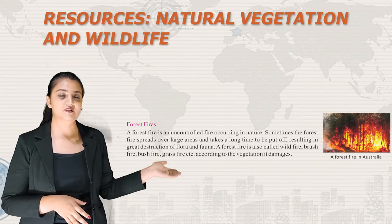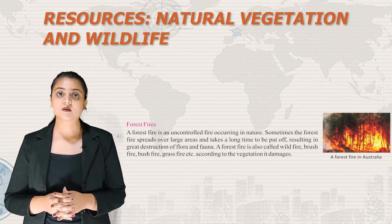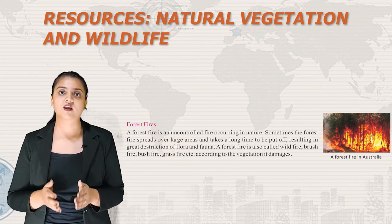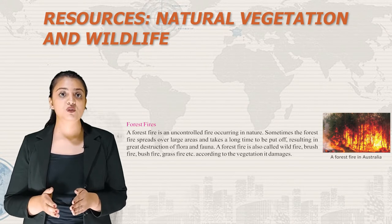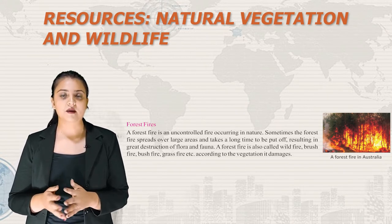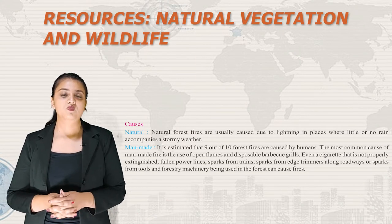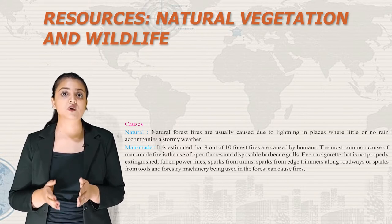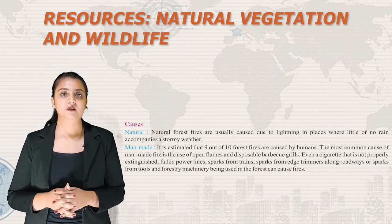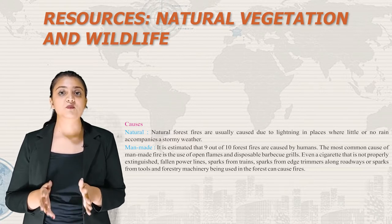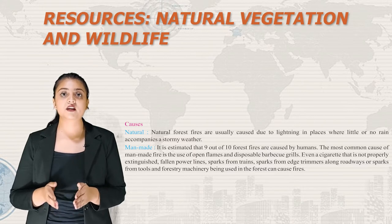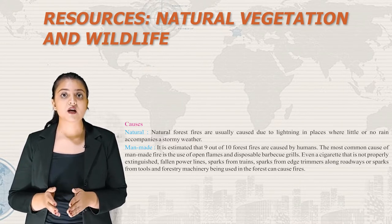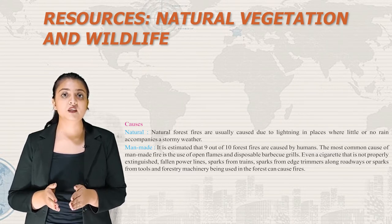A forest fire is an uncontrolled fire occurring in nature. Sometimes it spreads over large areas and takes a long time to be extinguished, resulting in great destruction of flora and fauna. A forest fire is also called wildfire, brush fire, bush fire or grass fire depending on the vegetation it damages. Natural forest fires are usually caused by lightning during stormy weather with little or no rain. It is estimated that 9 out of 10 forest fires are caused by humans, most commonly through use of open flames, disposable barbecue grills, improperly extinguished cigarettes, fallen power lines, sparks from trains or forestry machinery.